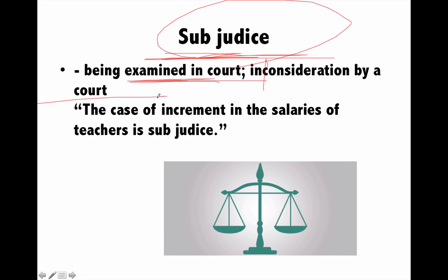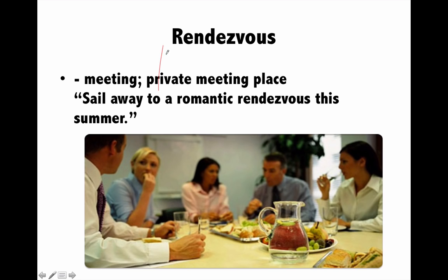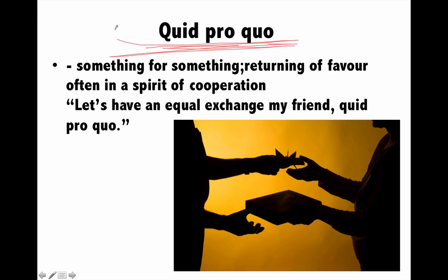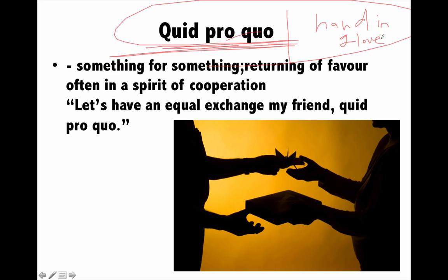Next is 'rendezvous', which means a private meeting or generally a meeting. For example, the show Rendezvous with Simi Garewal where she interviews celebrities one-on-one. Next is 'quid pro quo', a very important word. Quid pro quo means when somebody does something for you, you do something in return — mutual cooperation. For example, criminals of an area have a quid pro quo with politicians — criminals help politicians and politicians help criminals. In English you call this 'hand in glove'.